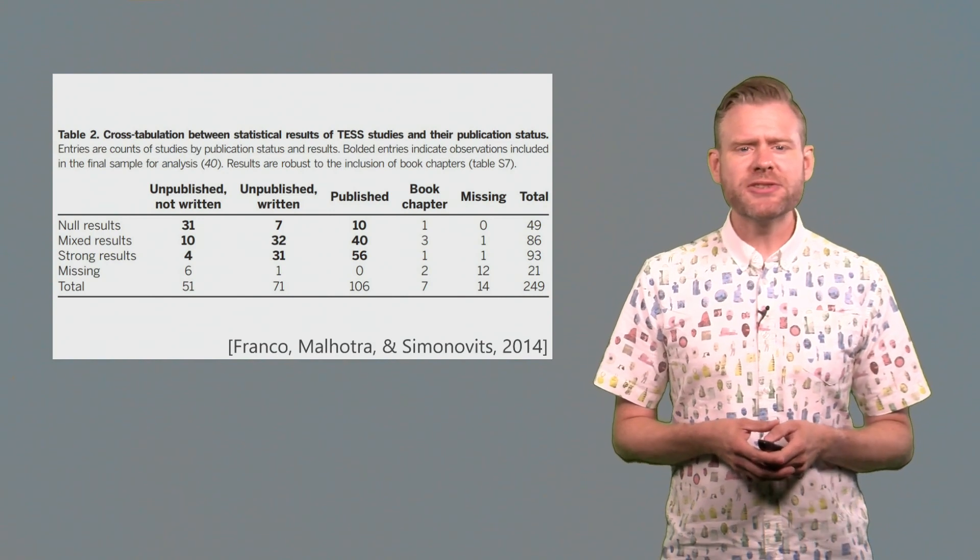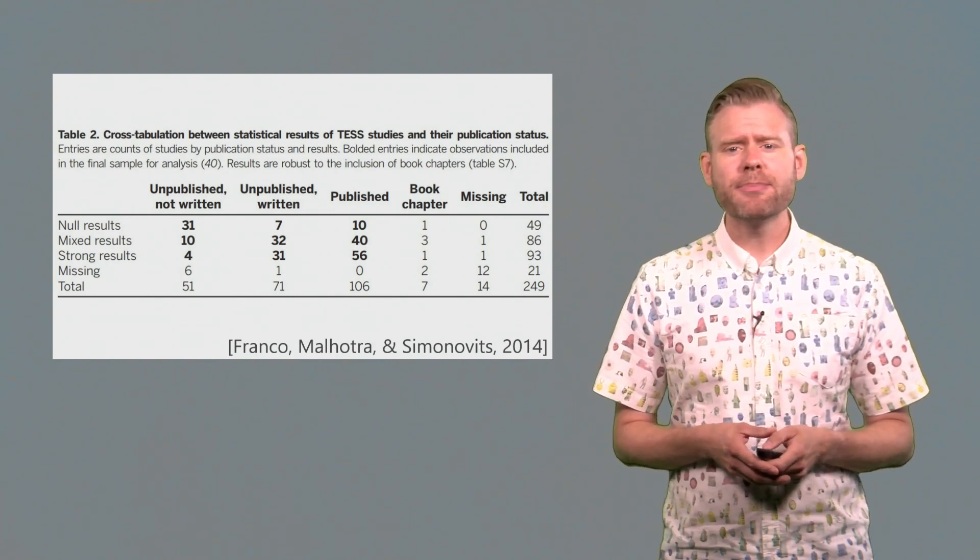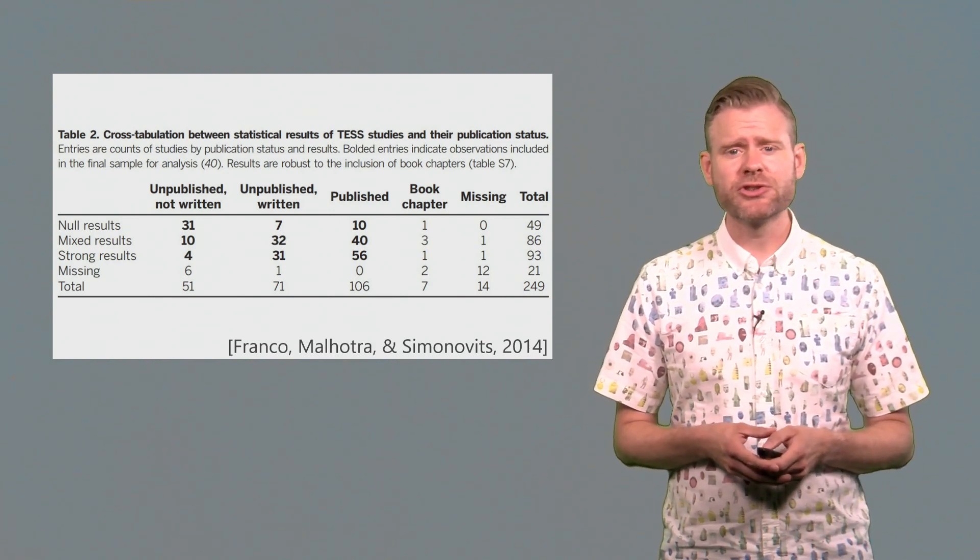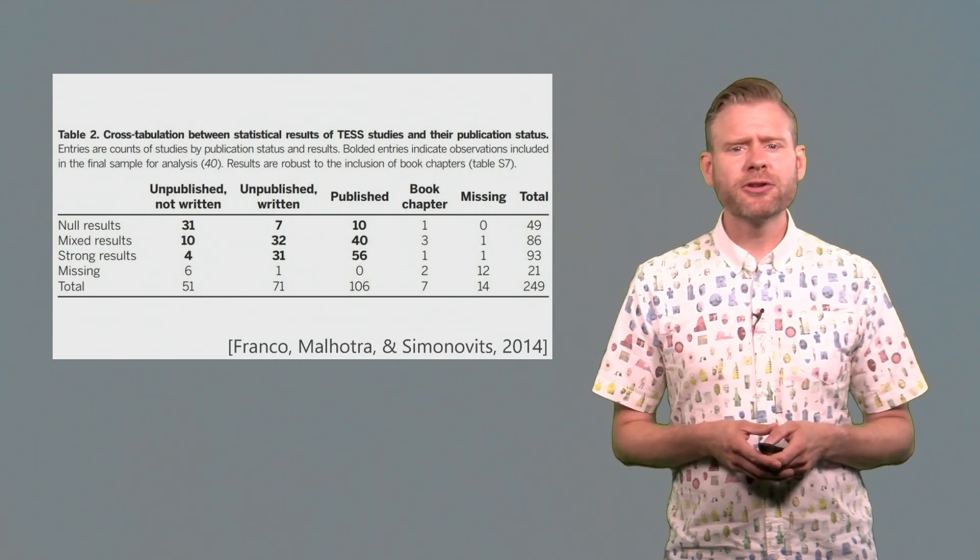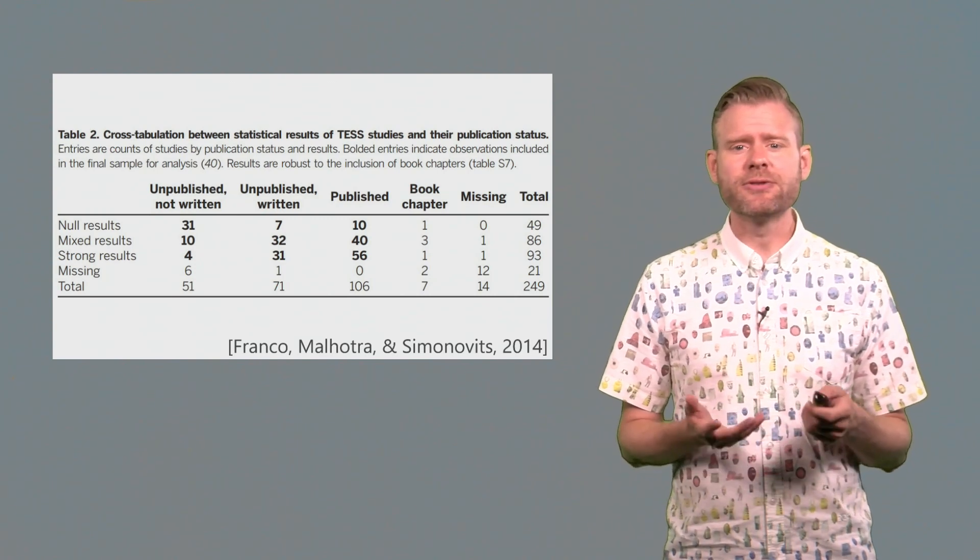As we can see in this table, researchers were very likely to have written up and published results if they were strong and in favor of their hypothesis. But null results were very often unpublished and not even written up.